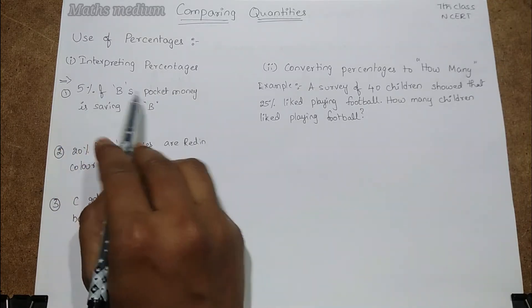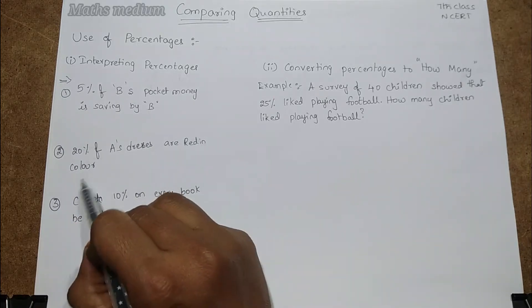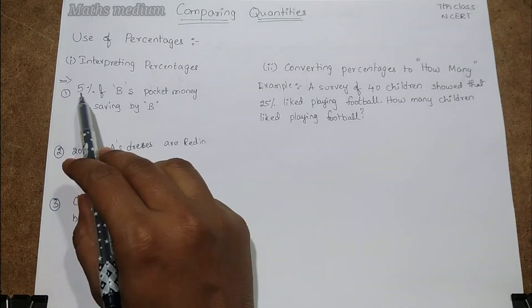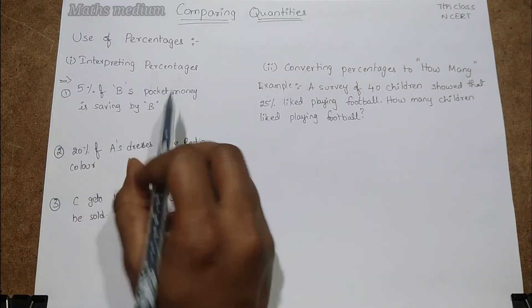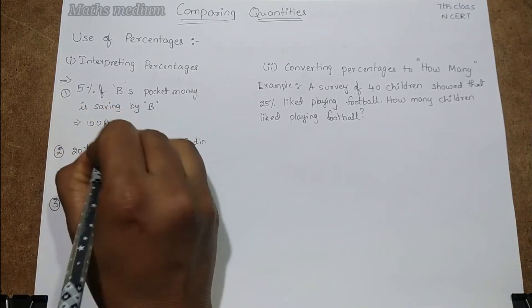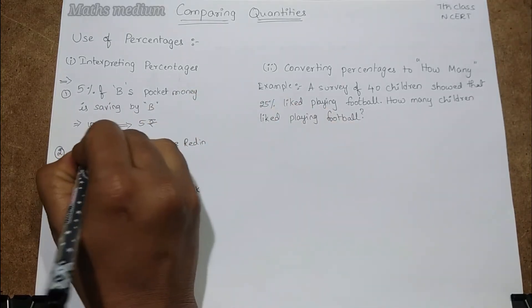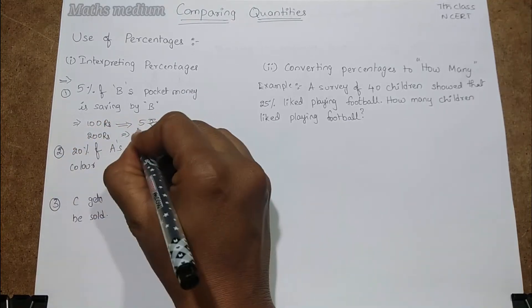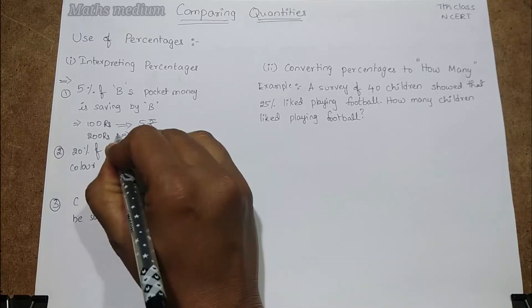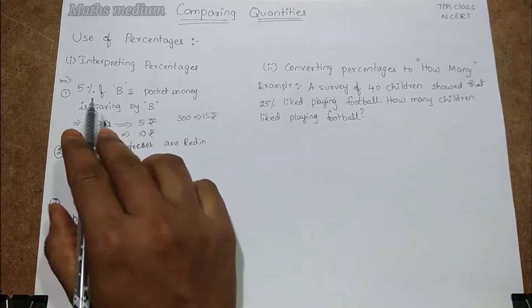See here, three types of statements are there. 5% of B's pocket money means if he got 100 rupees of pocket money he is saving 5 rupees of money. If he gets 200 rupees then he will double it, 5 to 10 rupees. If he gets 300, guess how much? 15 rupees are saving by B.